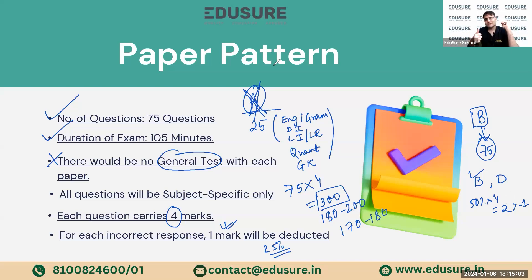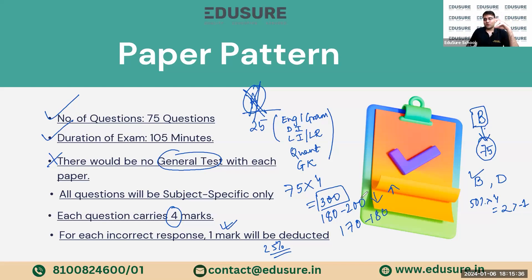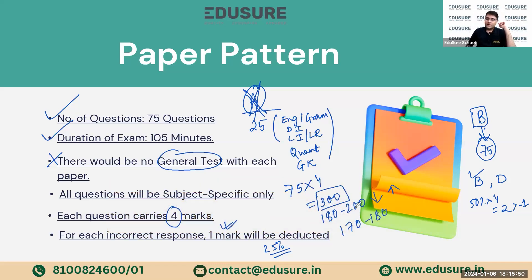To summarize: no general test, only the subject-specific part will be there in CUET. Every correct question gets four marks, total marks is 300. The cut-offs I mentioned are expected — if difficulty increases they can go lower, if it decreases or students are more competitive they can go higher. It is basically a percentile system; the higher the percentile, the better your chance of making it to the top institutes from CUET.